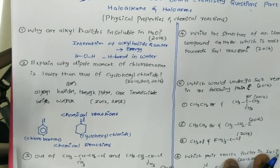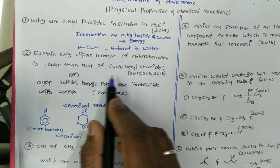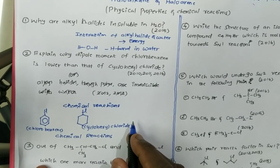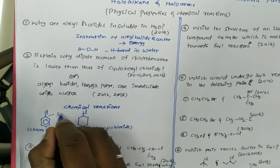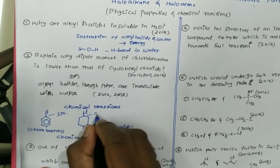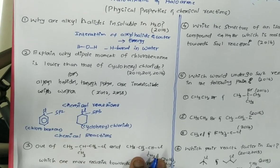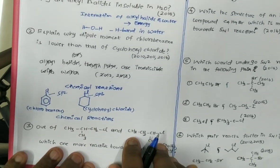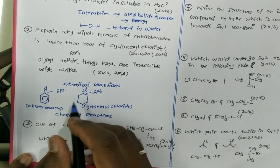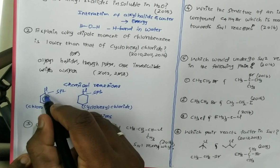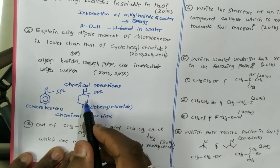The second question: explain why the dipole moment of chlorobenzene is lower than that of cyclohexyl chloride. There are two reasons. First, the C–Cl bond in chlorobenzene is SP2 in nature, whereas in cyclohexyl chloride the C–Cl bond is SP3 in nature, because chlorobenzene has a double bond while cyclohexyl chloride has only a single bond.